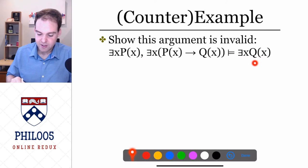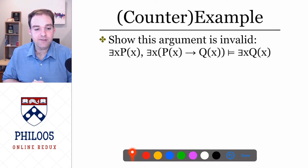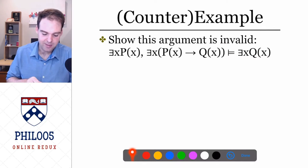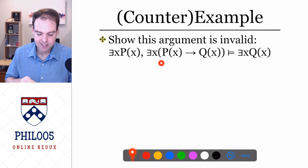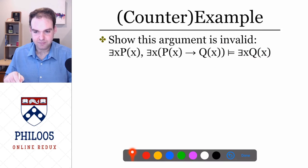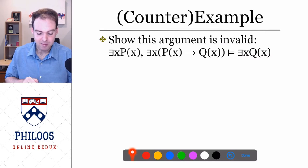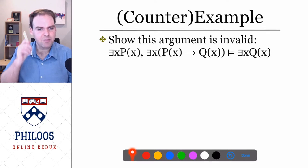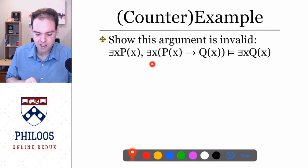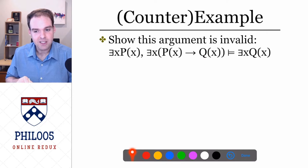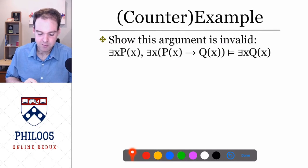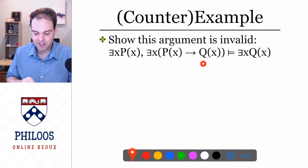So let's do one. Here's an argument — this argument is invalid. The argument is: there exists something that's P, and there exists something such that if it's P then it's Q; and the conclusion is there's something that's Q. This is a really natural argument form that people sometimes use in formal arguments. But this argument form is invalid — you should probably recall that it gets weird whenever we have an existential quantifier outside of a material conditional. We're going to show that this argument is invalid.